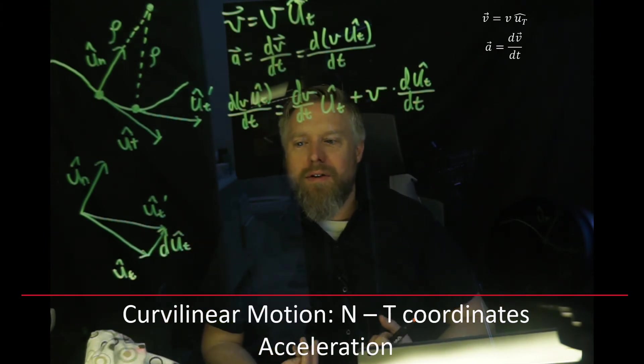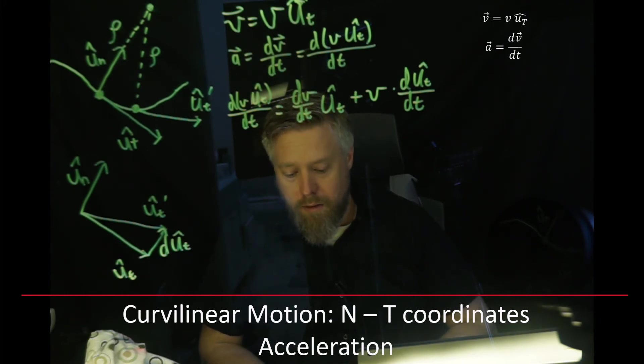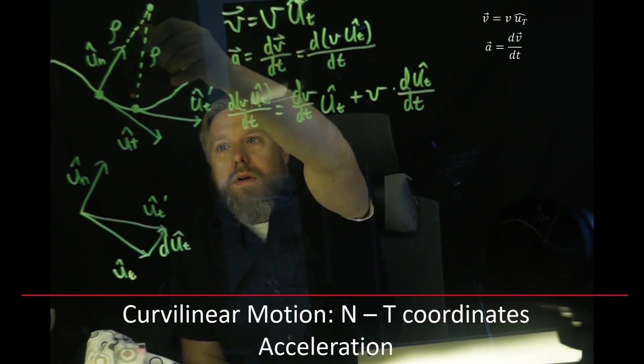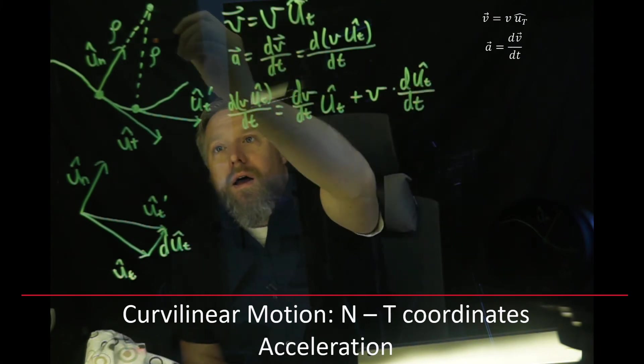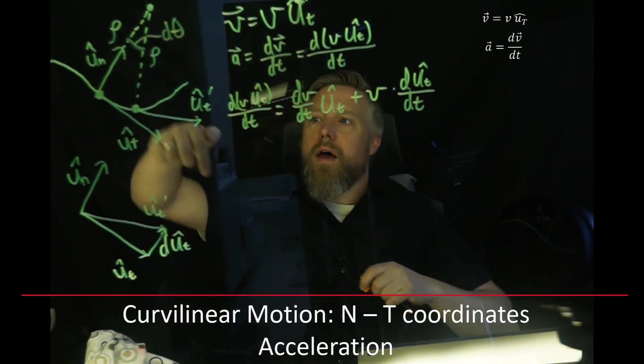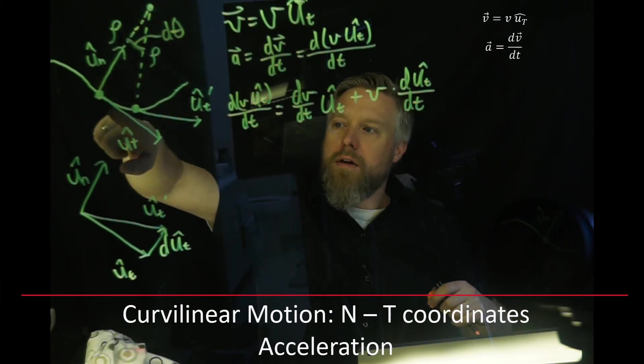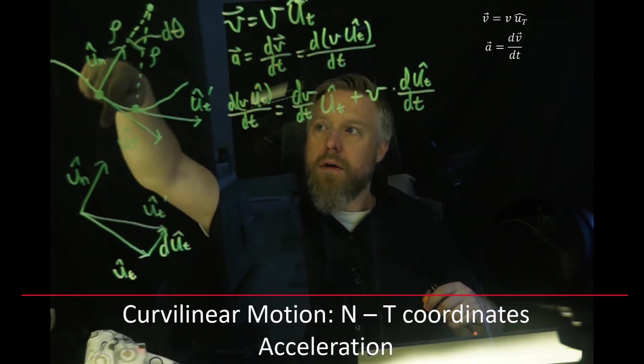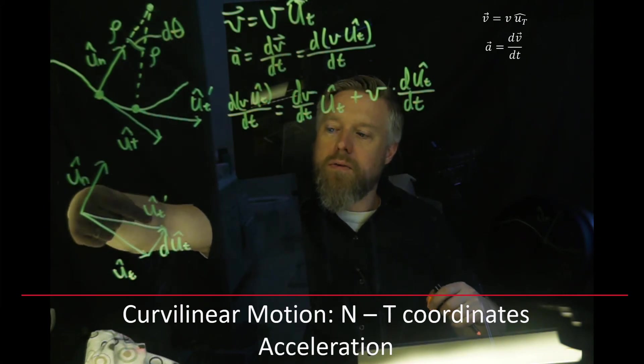So what is dUT? Well, it would be the change. That would be the vector going from the original unit vector to the new unit vector would be our dUT. Now we just have to figure out how do we calculate that? What's the magnitude of it? It's not a unit vector, it's a change in a unit vector. And we're going to do that using our arc length trick that we learned in the previous video. So if you can picture this, up here we have a circle, we have a radius that is sweeping through a given angle.